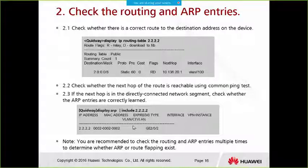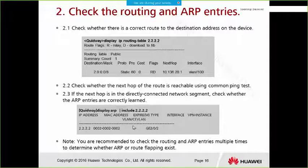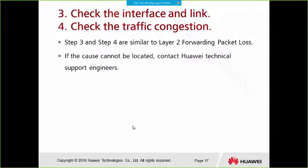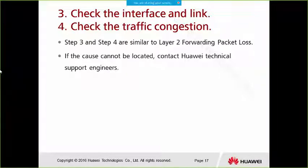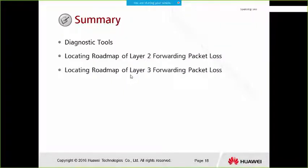It is recommended to check the routing and ARP entries multiple times to determine whether ARP or route flapping exists. Checking the interface and link and checking traffic congestion for Layer 3 packet loss follow the same steps as Layer 2 packet loss, so they will not be repeated.